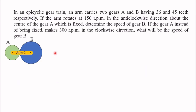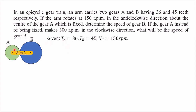Now we will take one example to explain the tabular method for analyzing an epicyclic gear train. An arm C carries two gears A and B, with 36 and 45 teeth respectively. The arm rotates at 150 rpm in the anti-clockwise direction about the center of gear A, which is fixed. Determine the speed of gear B. In the second case, if gear A instead of being fixed makes 300 rpm in the clockwise direction, what will be the speed of gear B?